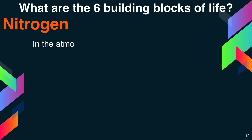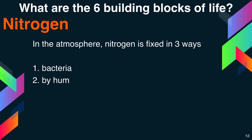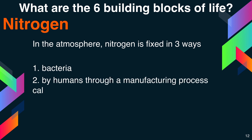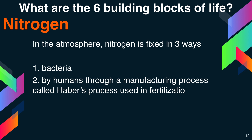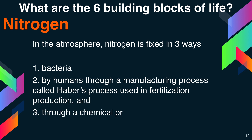In the atmosphere, nitrogen is fixed in three ways: first, by bacteria; second, by humans through a manufacturing process called the Haber process, used in fertilizer production; and third, through a chemical process initiated by lightning.